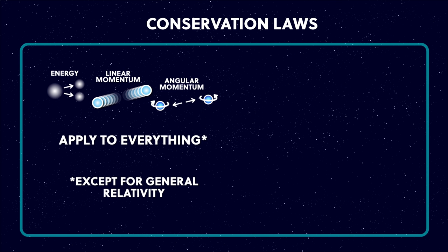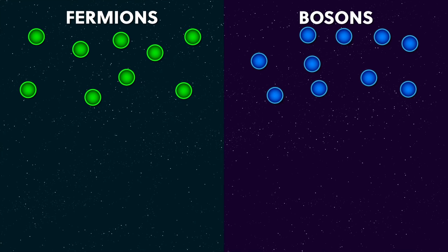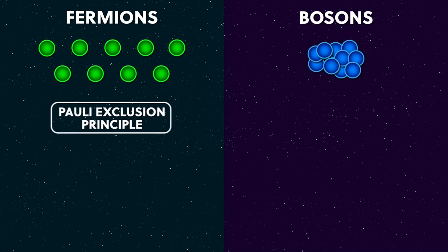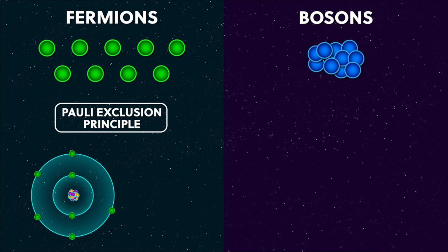These aren't conserved in general relativity if spacetime is changing, but we don't have to worry about that for this video. The second consequence of spin is even more dramatic. When you get a bunch of fermions together, collectively they behave very differently to when you get bosons together in a group. When you get fermions together, they obey a rule called the Pauli exclusion principle, which says that fermions can't share the same quantum state — and this is a very good thing.